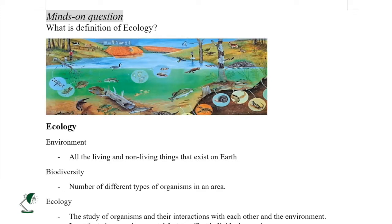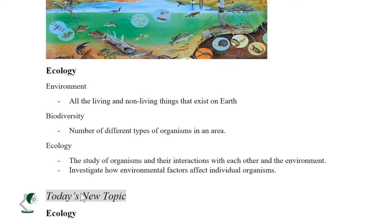Hello guys, today we're going to cover grade 9 biology, specifically the topic of ecology. Based on previous lessons, ecology is the study of organisms and their interactions with each other and the environment. Looking at the diagram, you can see living organisms like fish, dragonflies, insects, birds, and snails, as well as abiotic factors like water, air, and soil.